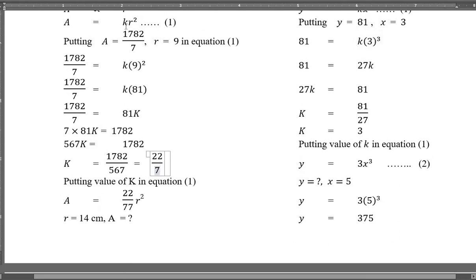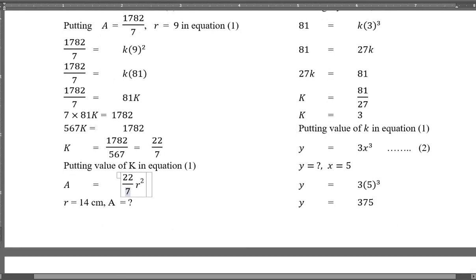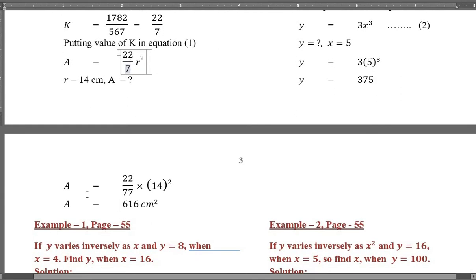Putting the value of k equals 22/7 in equation 1: a equals (22/7)·r². Now putting r equals 14 cm: a equals (22/7)·(14)². After calculation, the value of a comes out to be 616 square cm.